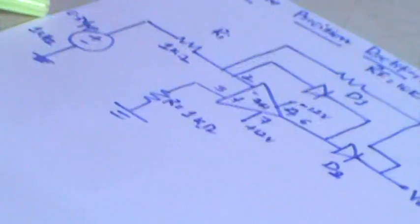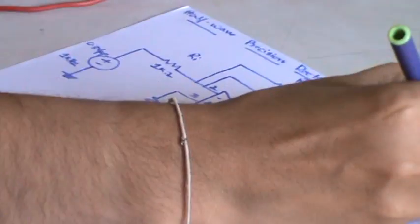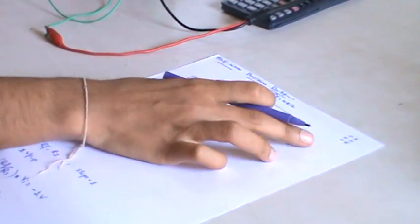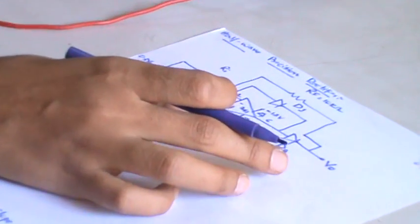Same as this precision rectifier, it will take the values in the range of 0.3, 0.2, 0.5, all these ranges will be rectified and you will get the pulsating DC output.